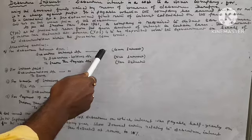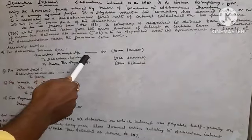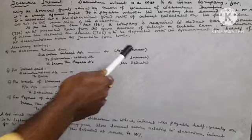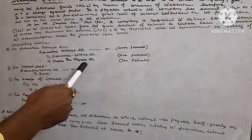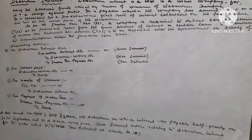Accounting Entries Relating to Debenture Interest. For Debenture Interest Due: Debenture Interest Account Debit — that is the gross interest — to Debenture Holders' Account — that is the net interest — and to Income Tax Payable Account — that is tax deducted.